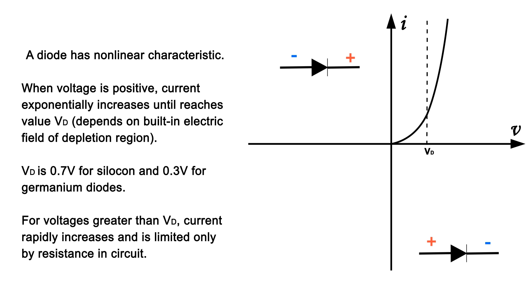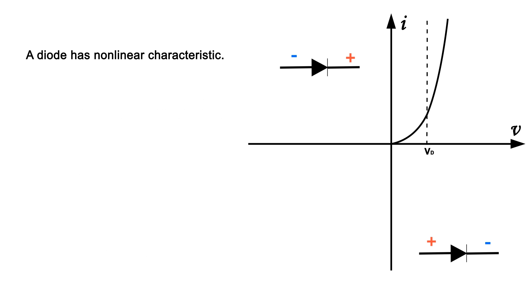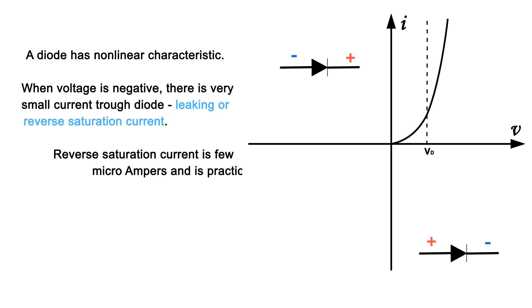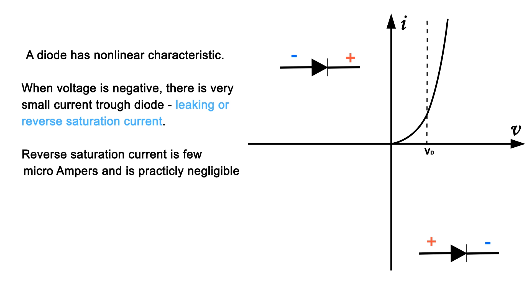For voltage greater than Vd, current rapidly increases and is limited only by resistance in the circuit. When voltage is negative, there is very small current through the diode - leaking or reverse saturation current. Reverse saturation current is few microamperes and is practically negligible.